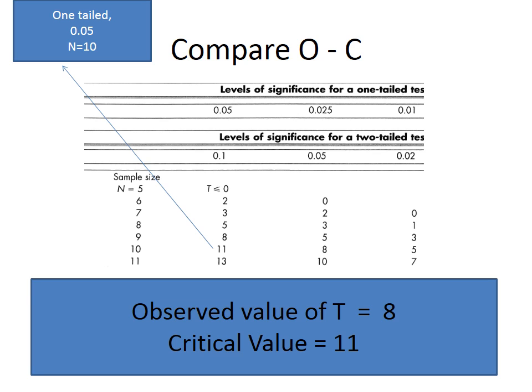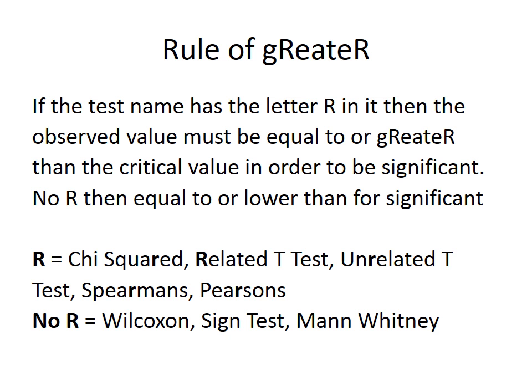To determine significance, you need to remember the rule of greater. If the test name has the letter R in it — chi-squared, related t-test, unrelated t-test, Spearman's, and Pearson's — the observed value must be equal to or greater than the critical value to be significant. Without the letter R — Wilcoxon, sign test, Mann-Whitney — the observed value must be equal to or lower than the critical value to be significant.